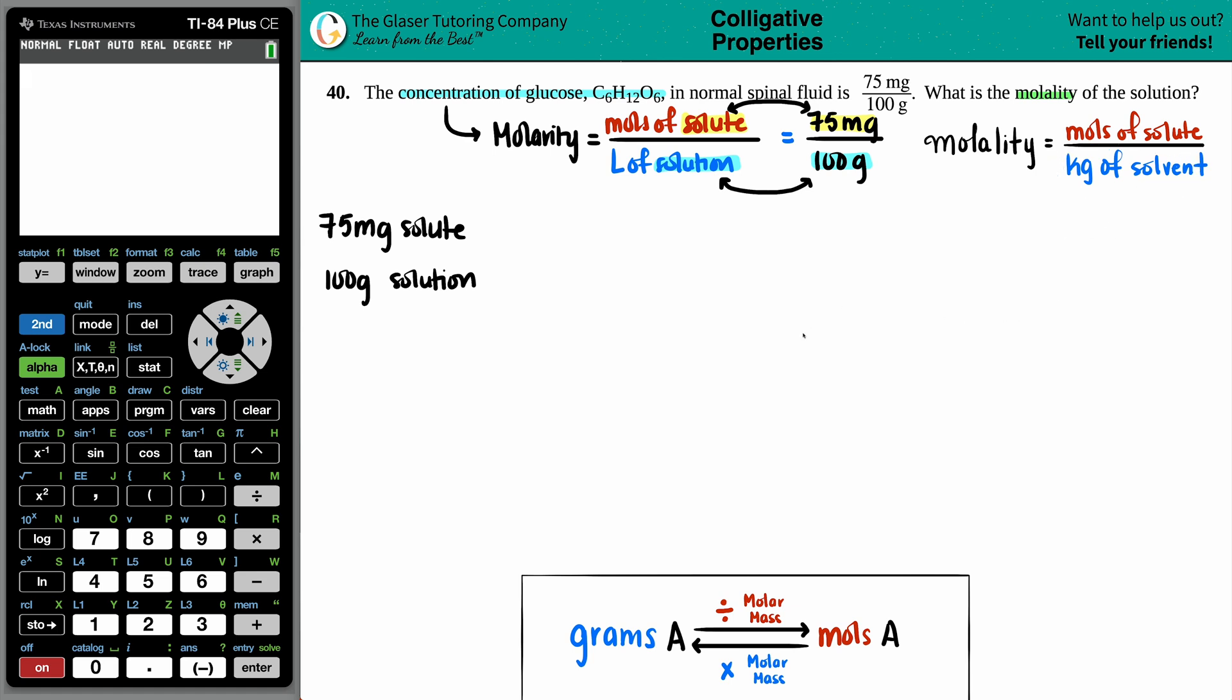Well, uh-oh. We have a solute. We have a solution value, but we don't have a solvent. So in order to find the molality, you first have to find the solvent number.